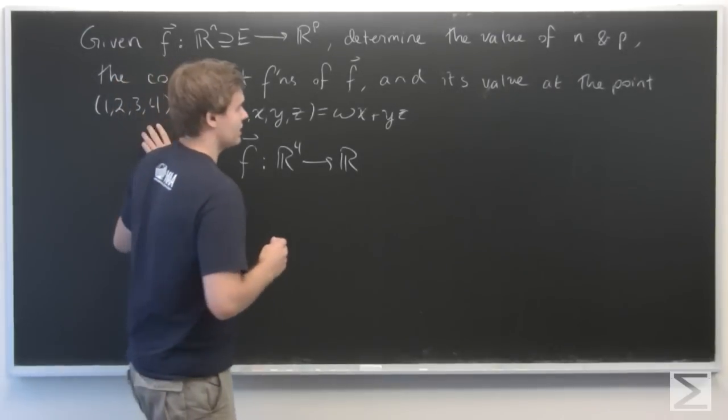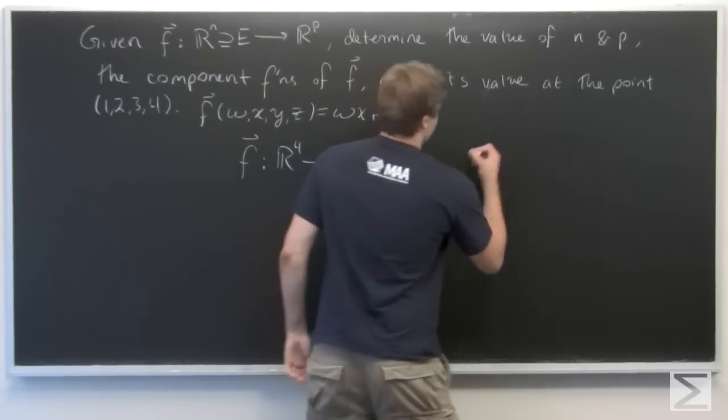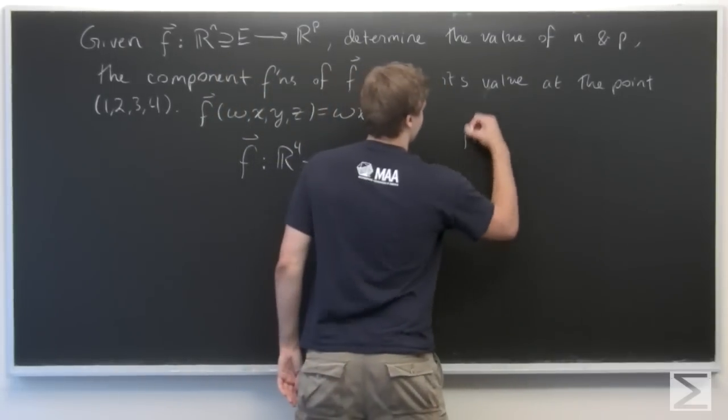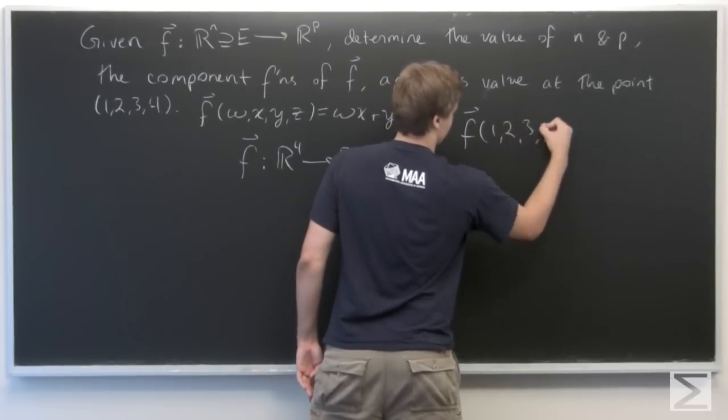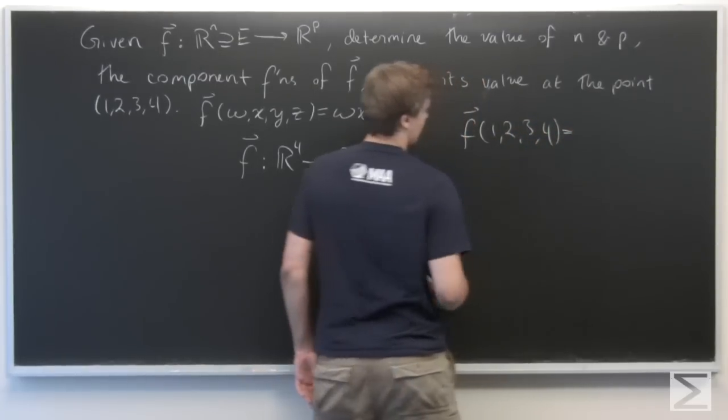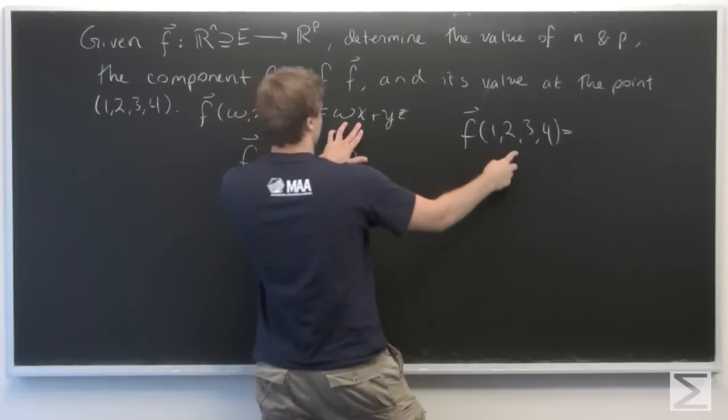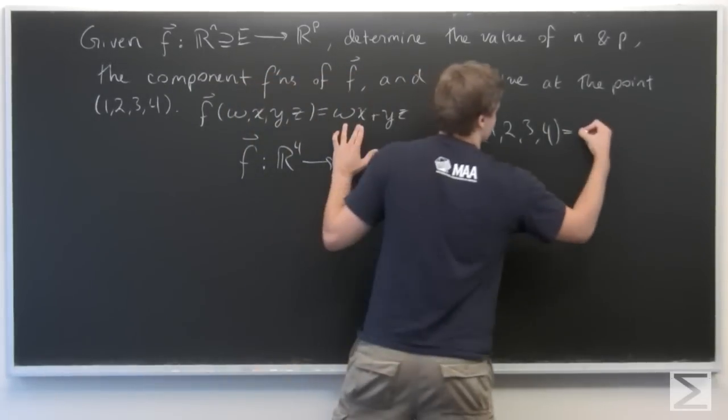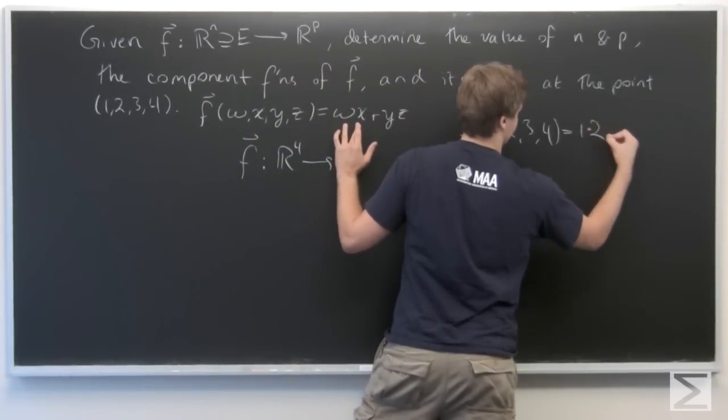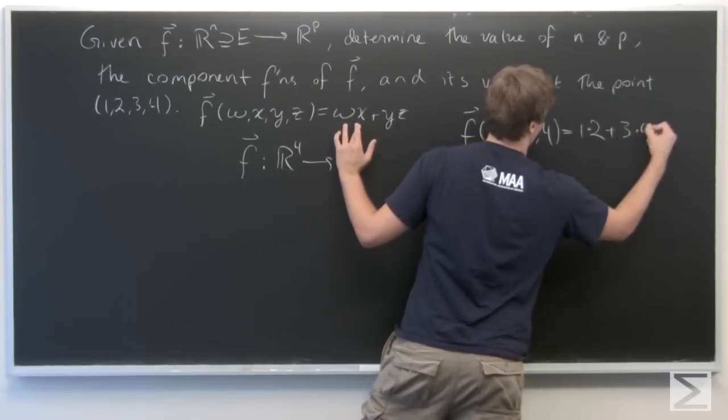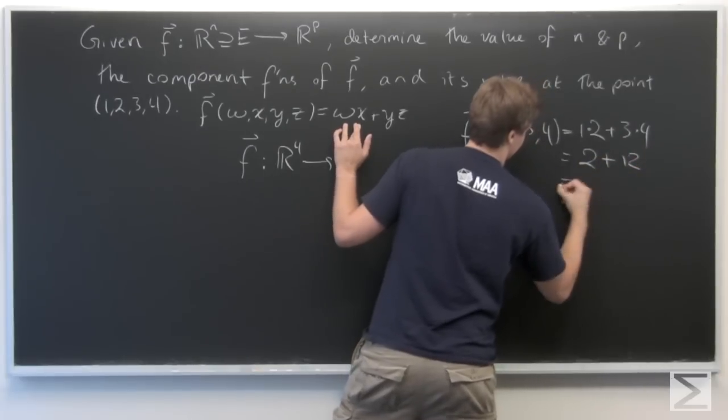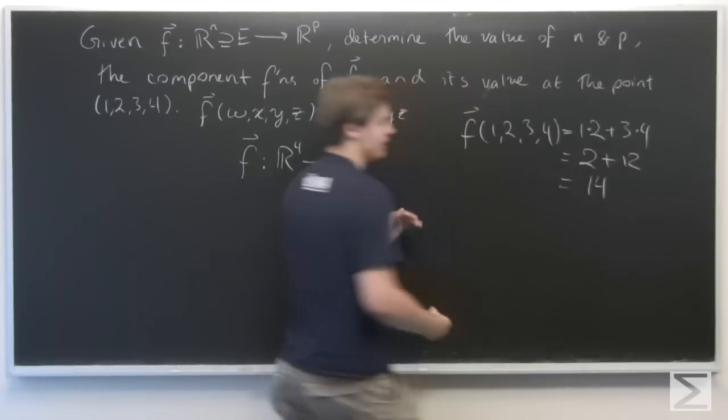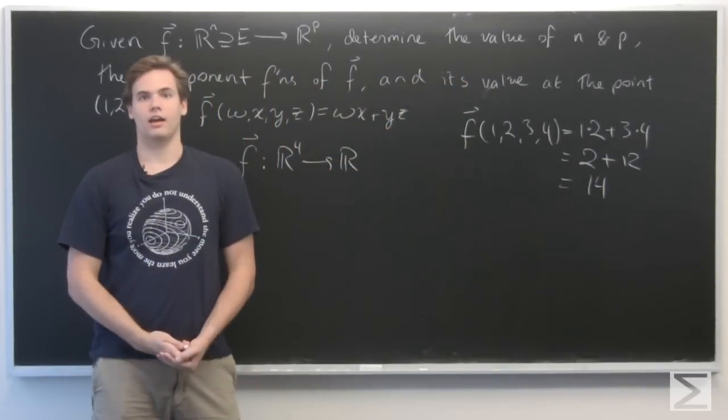Now we want to determine its value at the point (1, 2, 3, 4). So we plug it in. f(1, 2, 3, 4) is just going to be, comparing which variables go where, 1 times 2 plus 3 times 4, or 2 plus 12, and that's just 14. And that's it.